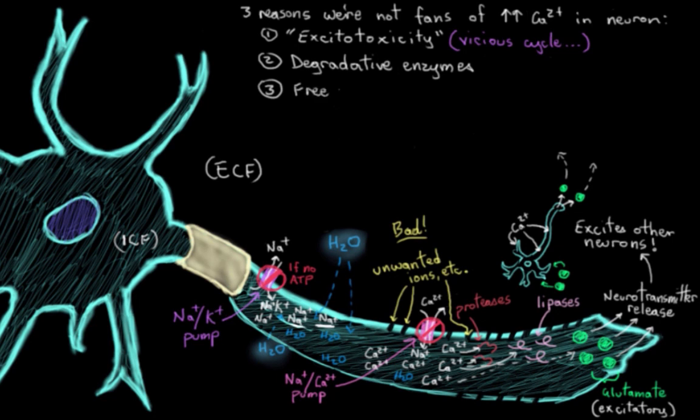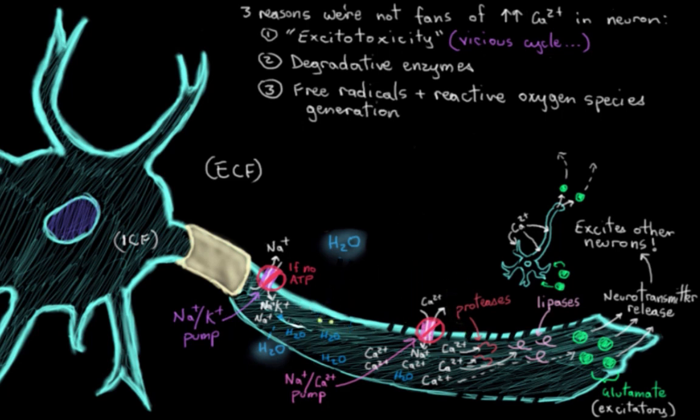And the third reason we don't want too much calcium is that too much calcium causes free radicals and reactive oxygen species to be generated. So these are little harmful chemicals that lead to further neuron damage, particularly of the cell membrane.